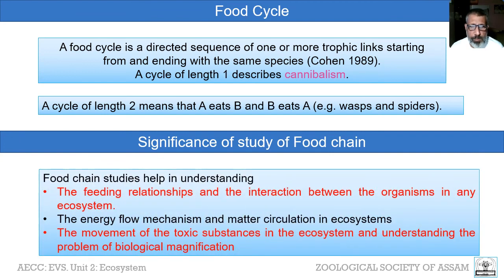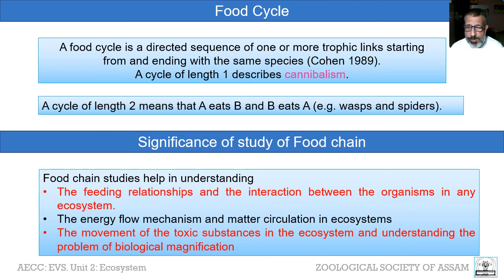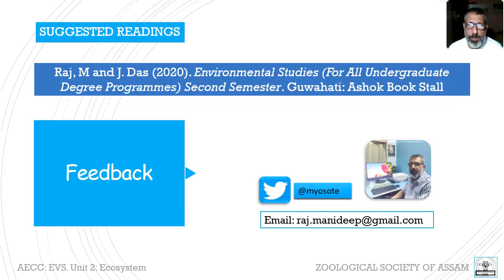The significance of studying food chains is that they help us understand the feeding relations and interactions between organisms in an ecosystem, the energy flow mechanism, and the circulation of matter. They also help us understand how biogeochemical cycles manifest themselves. Additionally, they help us understand how toxic substances get accumulated in the food chain and how the problem of biological magnification manifests itself. Thank you very much.